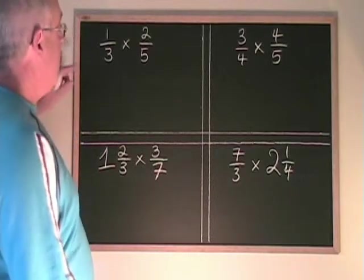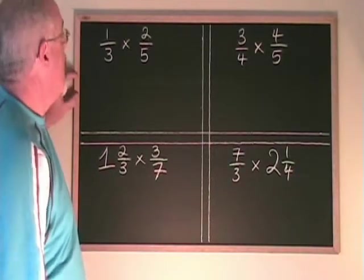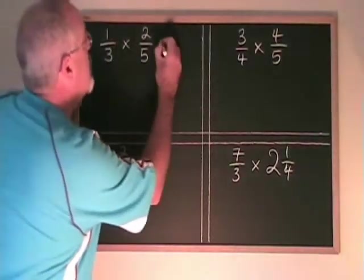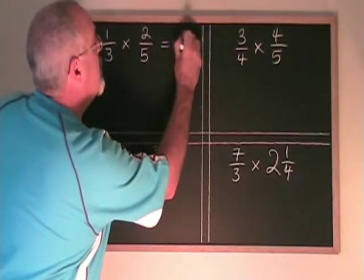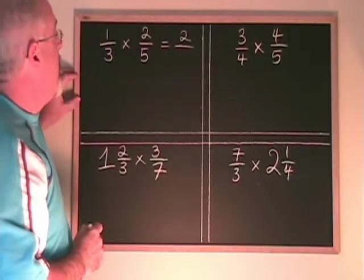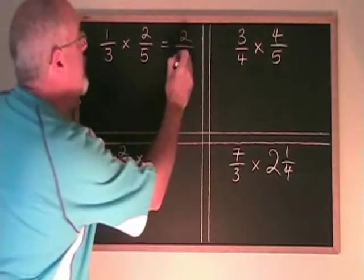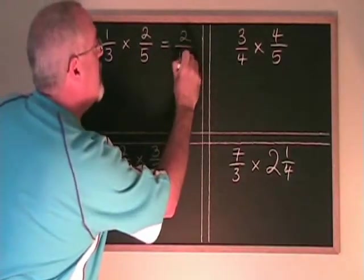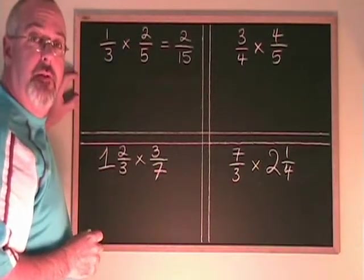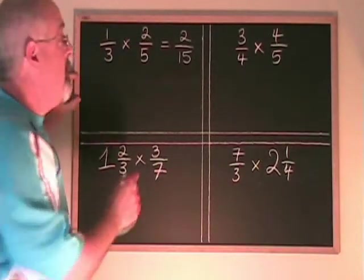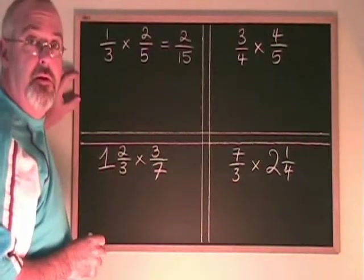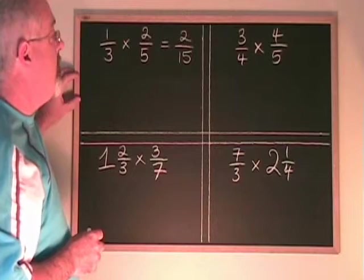Let's try this example. 1 times 2 is 2 — that's our new numerator. 3 times 5 is 15. Our answer is 2 fifteenths. 2 fifteenths cannot be reduced, so that is the final answer.